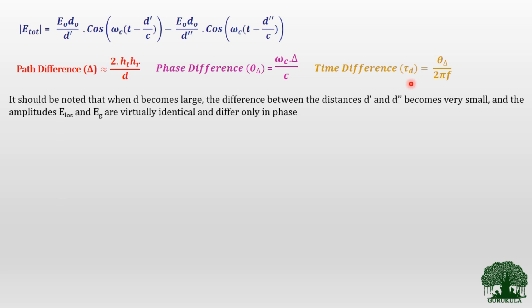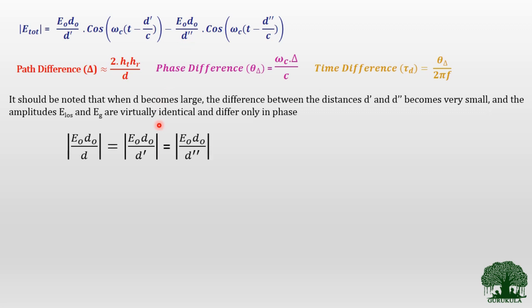With this, let us make further assumptions and formulate the path loss for the two-ray propagation model. We assume that when D becomes larger, the difference between the distances D′ and D″ becomes very small and can be considered negligible. In the equation, the amplitude part and the phase part are identified separately, and the same applies for the reflected wave.